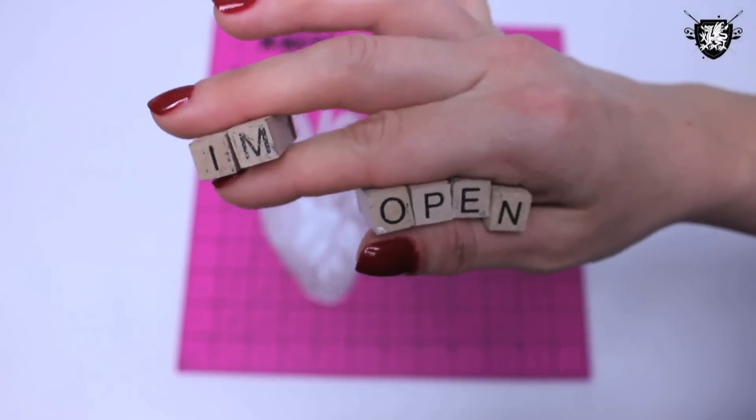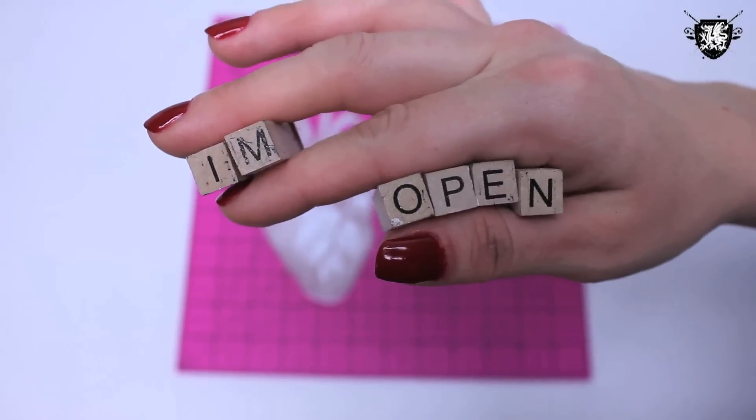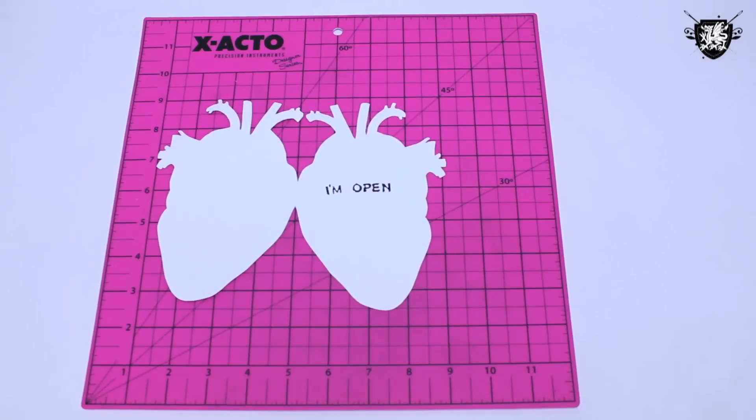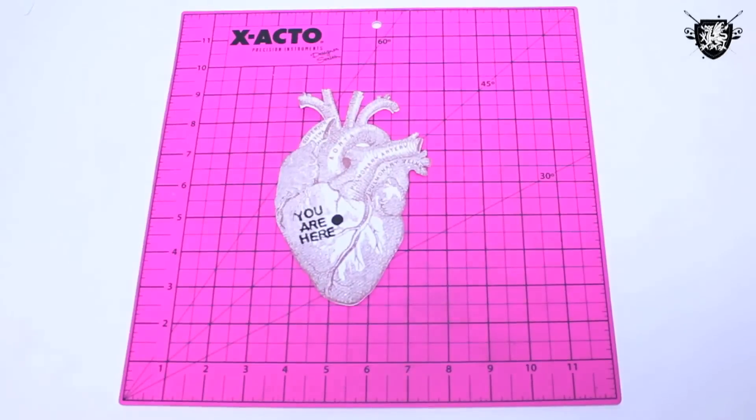Next, use some rubber stamps to add a clever message. If you don't have any rubber stamps, just write it on there. My favorites are: I'm open on the inside, or you are here on the outside.